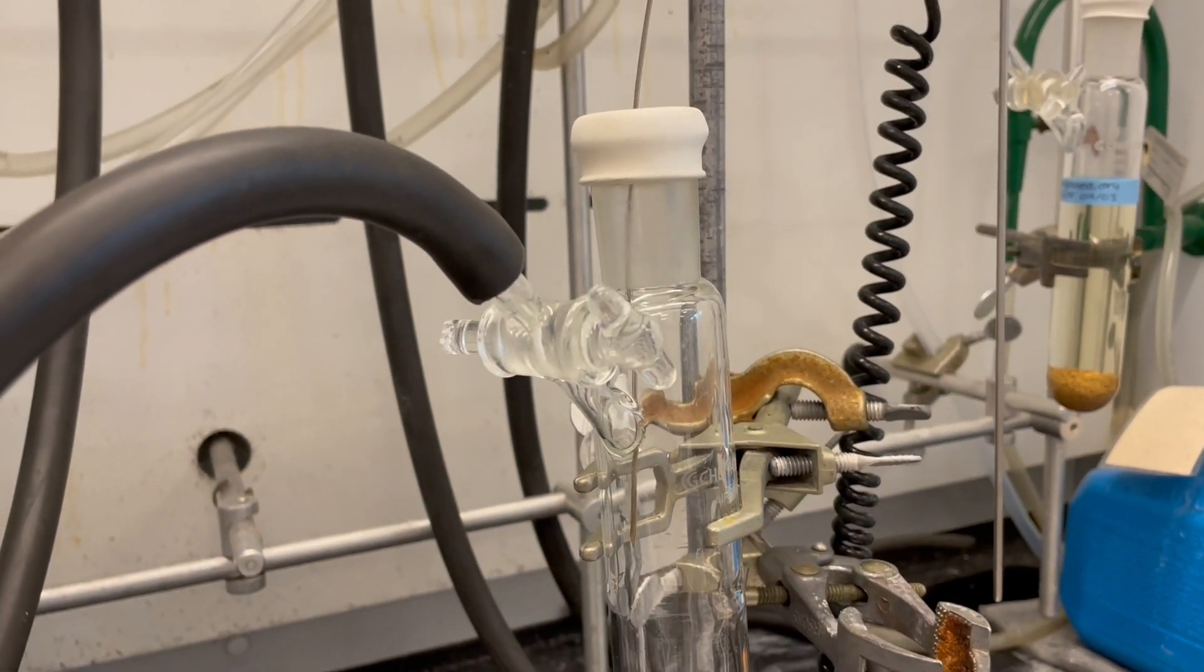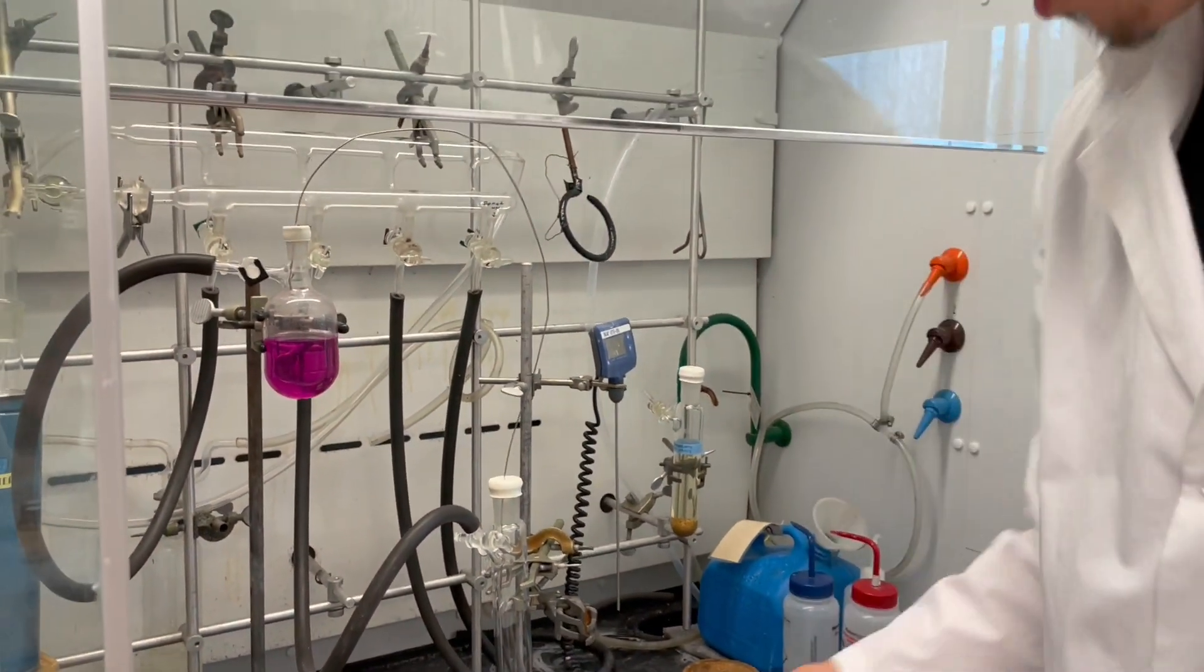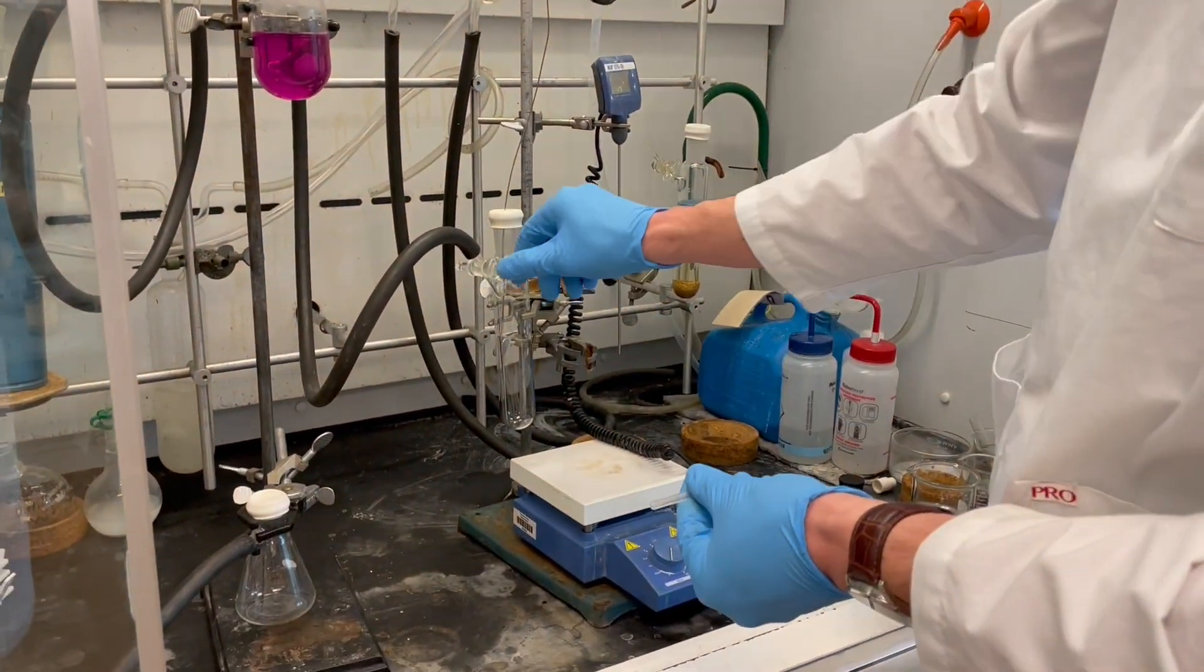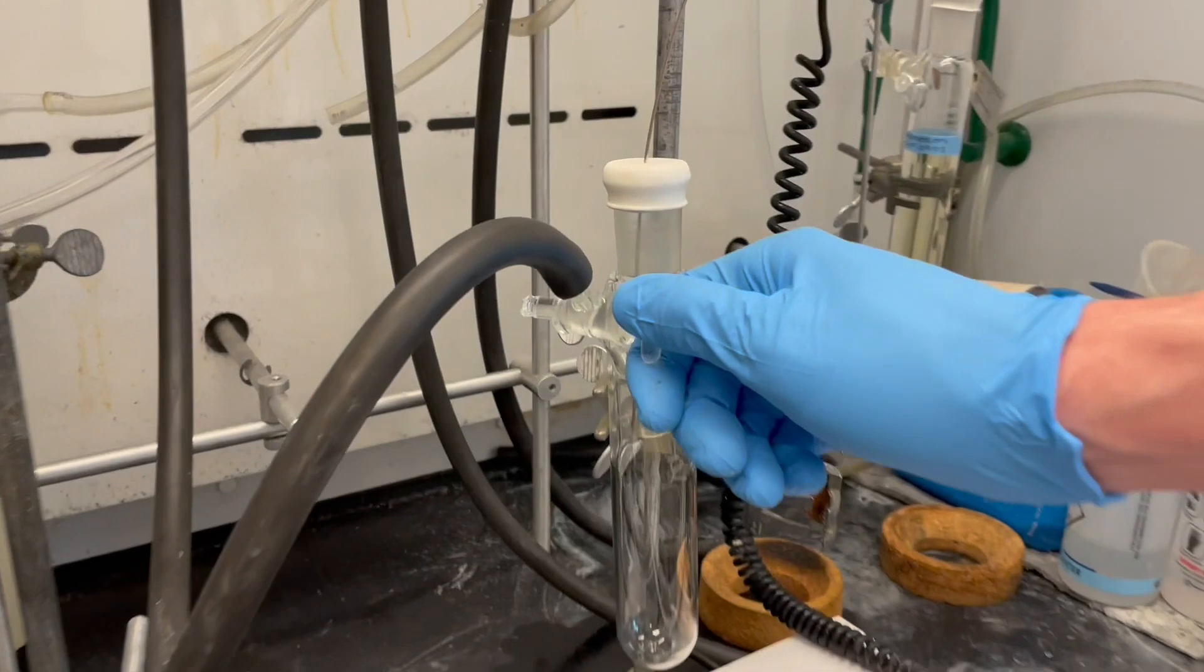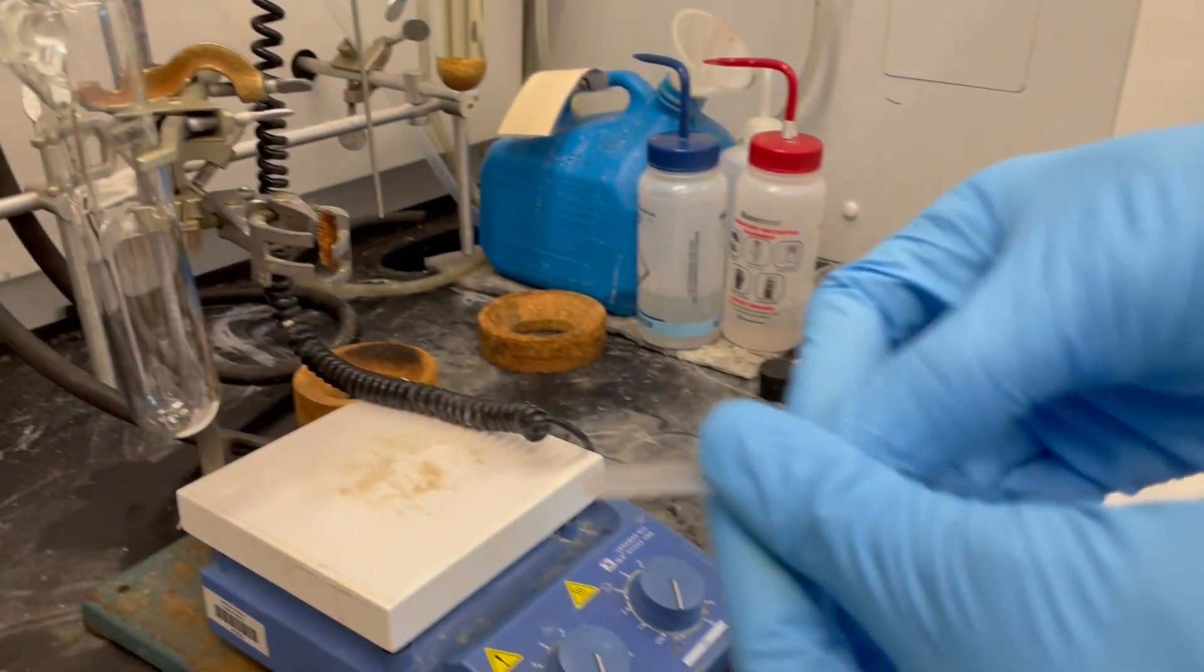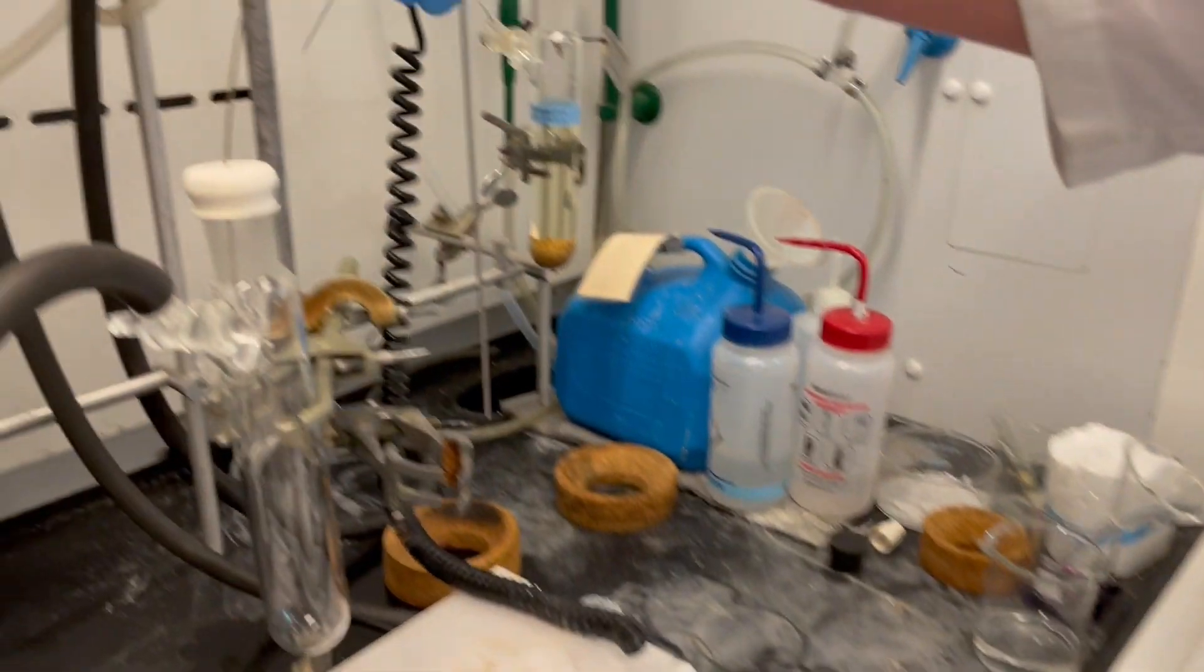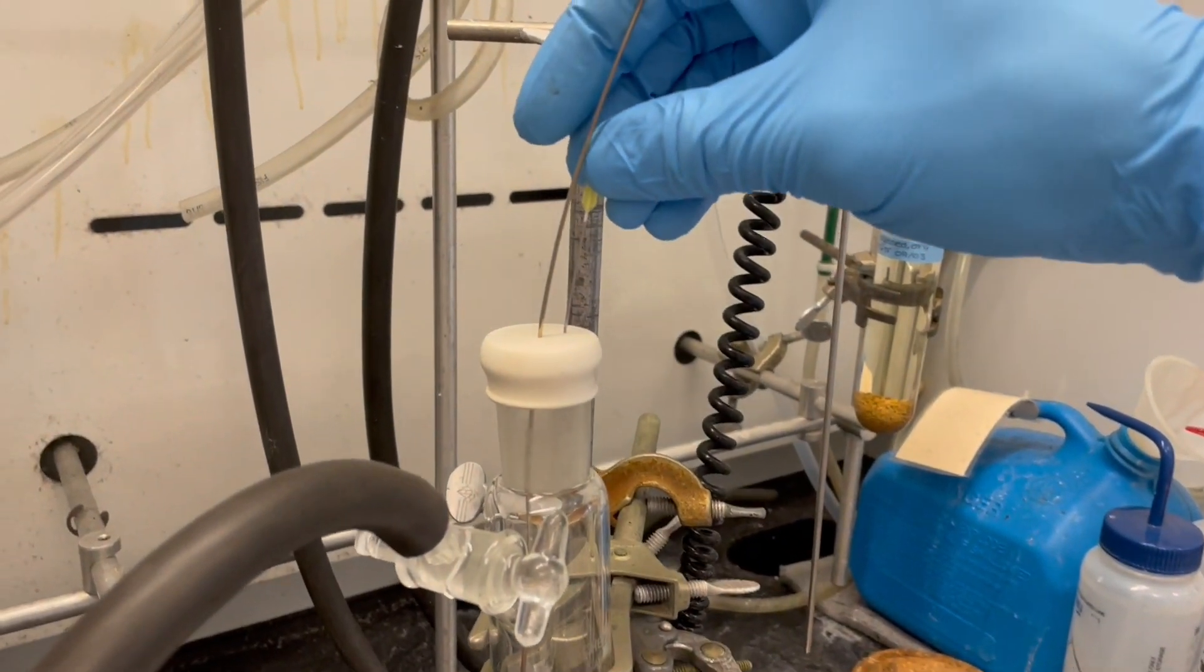As you can see, there's no transfer yet. Now we can close this to the nitrogen. Now we're going to take our bleed needle, go ahead and twist and pull, and insert it into our receiving flask.